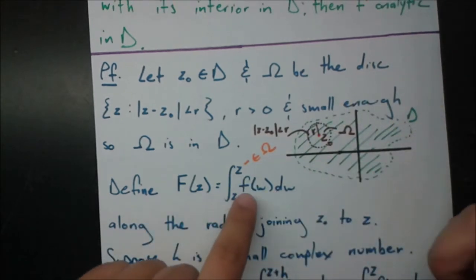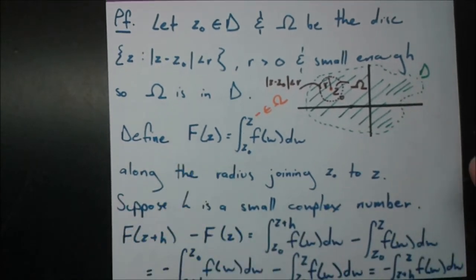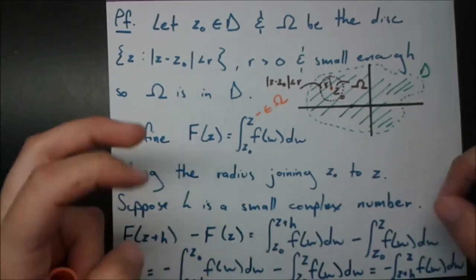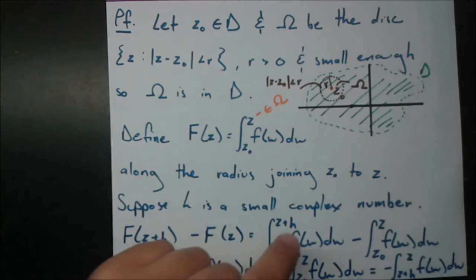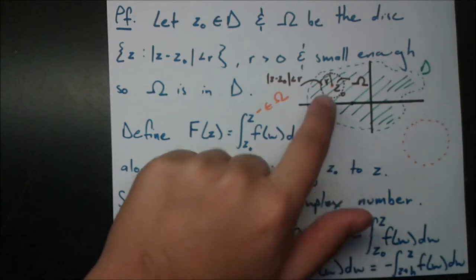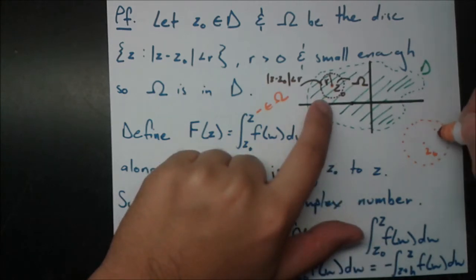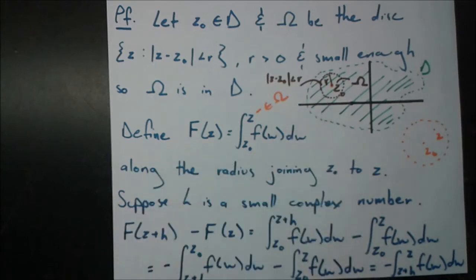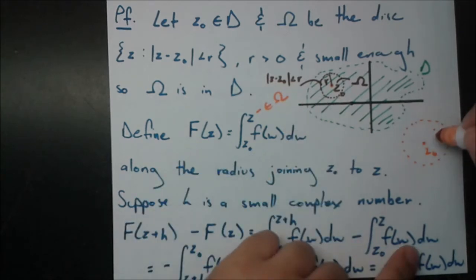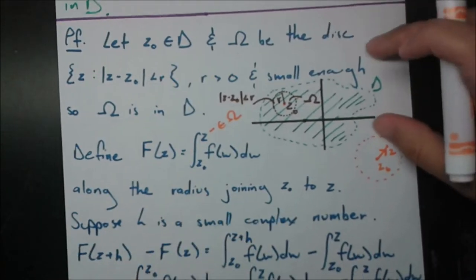We define big F(z) as the integral from z₀, which is a fixed point, to some other z that is an element of omega — inside this disk. That integral of f(w) dw is defined as big F(z). The curve here is going to be the line segment joining z₀ to z, oriented going towards z.